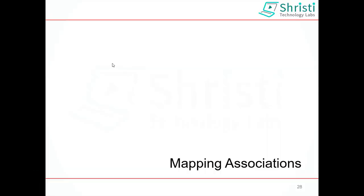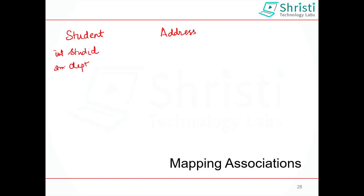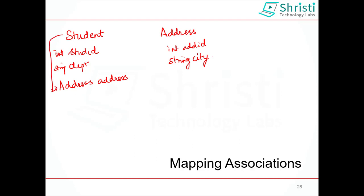Hello everyone. In this video let us discuss about association mapping in Hibernate. Association is a concept which deals with the dependencies between classes. For example, I have a Student class and an Address class. Student has two instance variables: student id and department. Address has instance variables address id and city. If I add address as a property to student, it means student depends on the address object. One student object has one address instance variable. This is called association mapping.